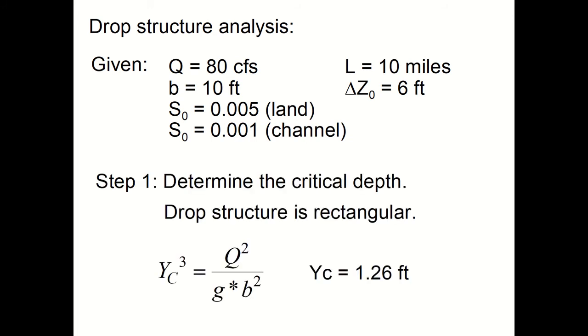Step 1 is to determine the critical depth as it flows into the drop structure. That can be obtained by the Froude number equation, setting the Froude number equal to 1 in a rectangular channel and solving for the critical depth. Critical depth is 1.26 feet.